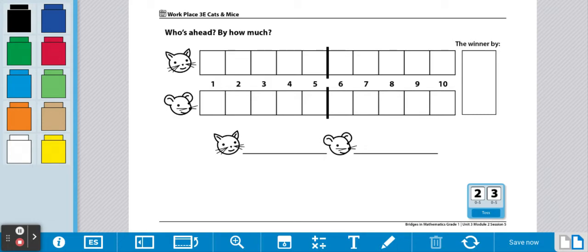This game can be played with a partner or by yourself. What you're going to do is take turns recording the cats and the mice sum. You're going to roll the dice, add them together, and record the answer.